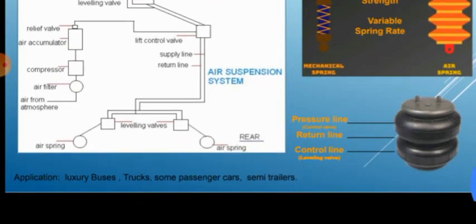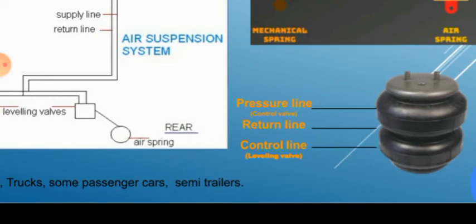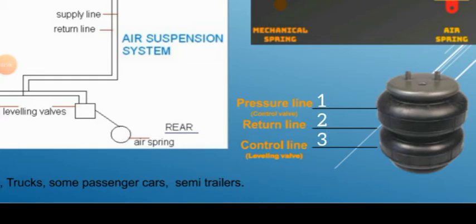In practical view, the air suspension system looks like this. This black color is an air suspension unit. Here you can see three lines. The first and second lines are connected to the control valve. The first line is called the pressure line, through which pressure comes inside the air suspension unit. The second one is a return line. If the pressure gets reduced in the system, then this pressure goes to the control valve with the help of this return line. The third line is a control line connected to the leveling valve.